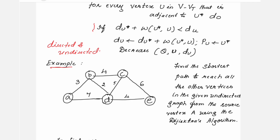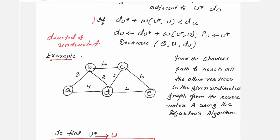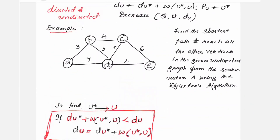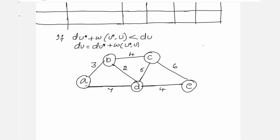Let me first show you on the graph itself how to update the values, then I will tell you how to fill the same thing in the table. The question is: find the shortest path to reach all other vertices in the given undirected graph from the source vertex.